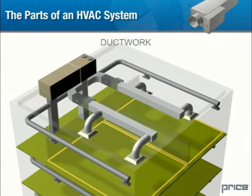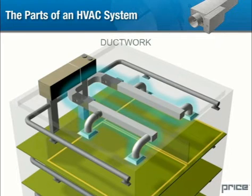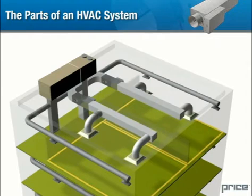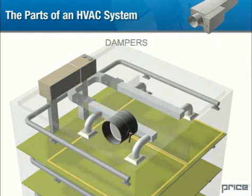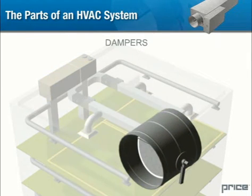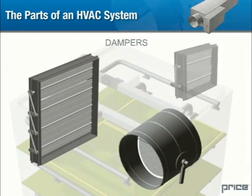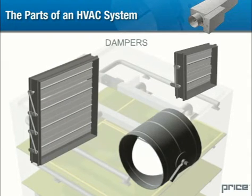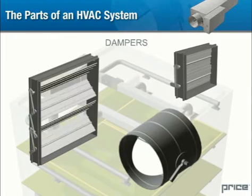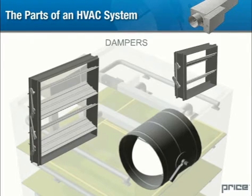Ductwork. Round, square, and rectangular ductwork provides a passage for the conditioned air from the air handling unit to the environment. A damper consists of one or more blades which can be used to control the amount of air flow through a duct. Manual dampers are used to ensure that different parts of the building receive proportional ventilation based on area and demand.